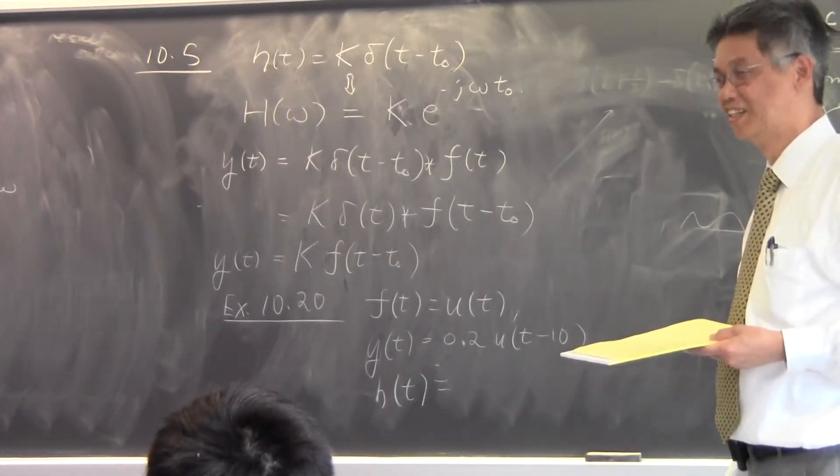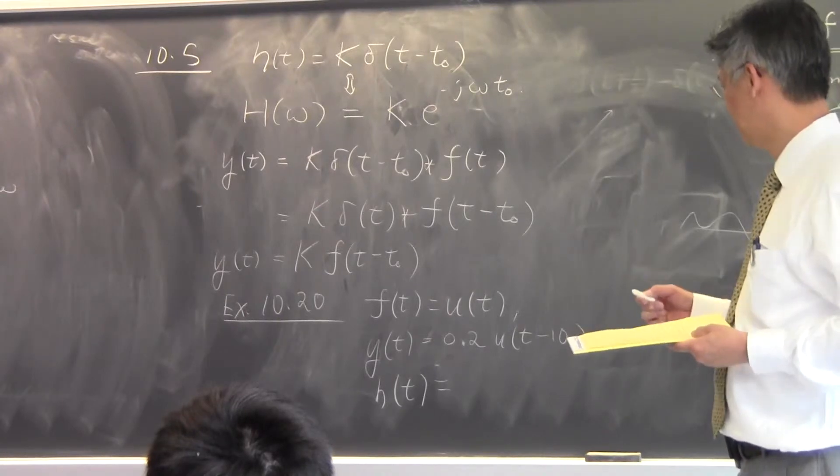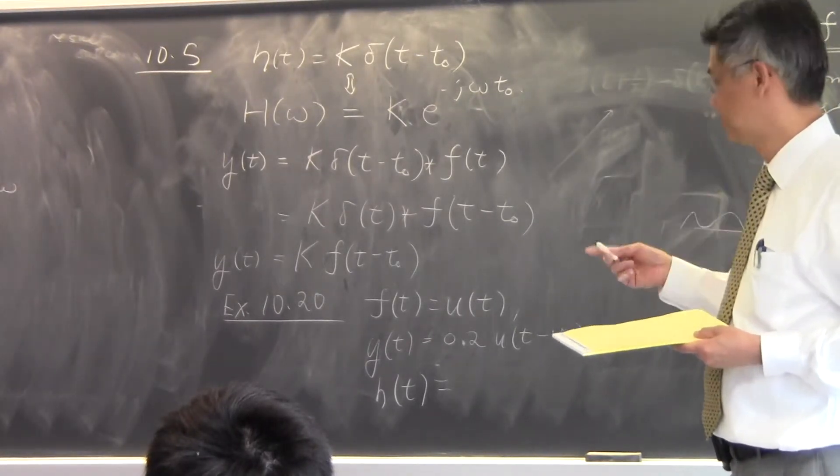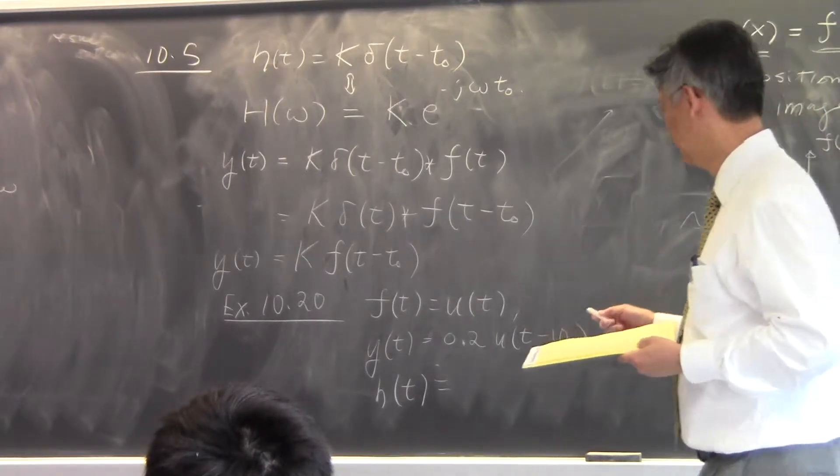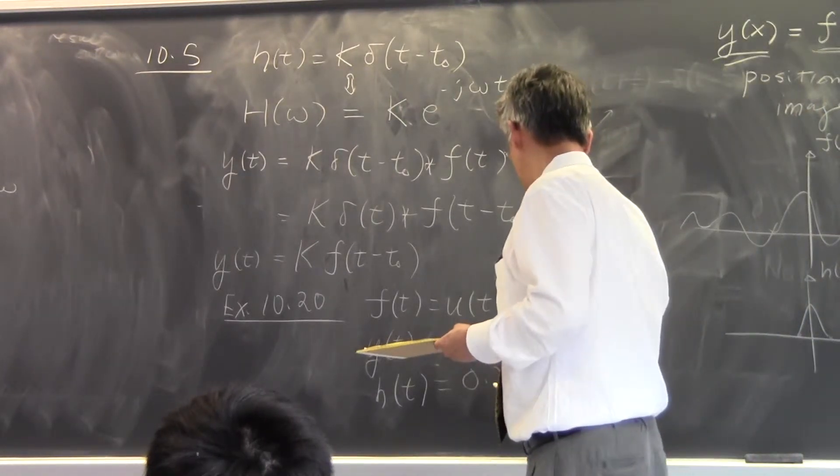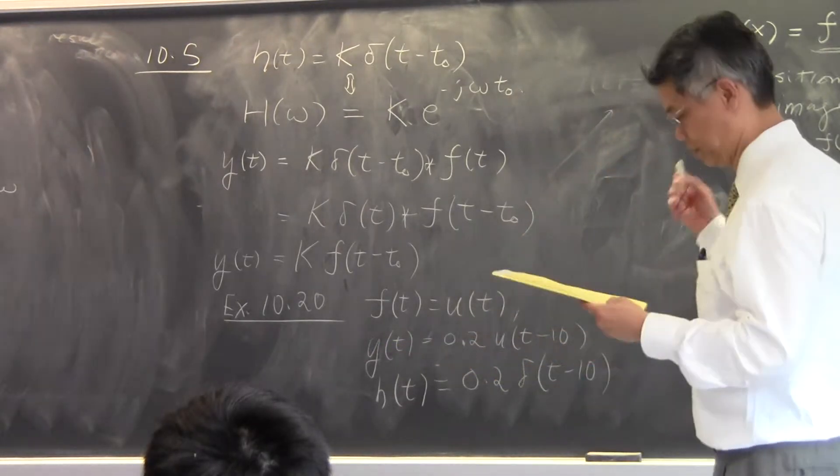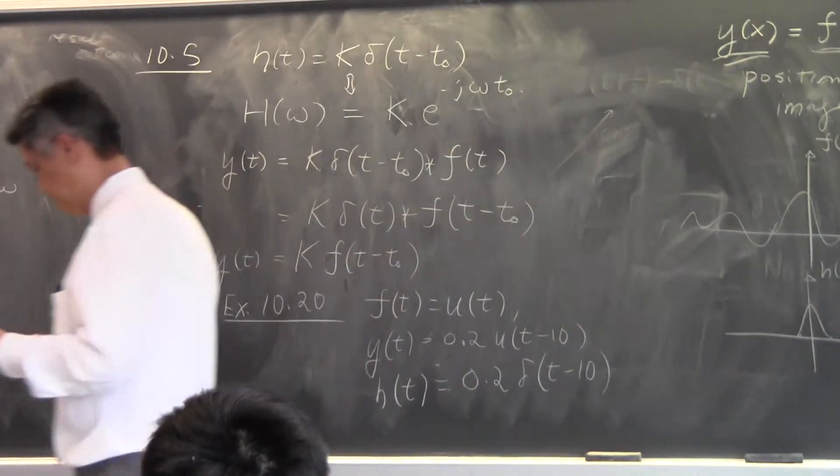It's a piece of cake, right? So, if f of T is that, the output is that, then the impulse response of this system is 0.2 delta T minus 10. Very good. So, that is rather simple, and all of you know how to get there.